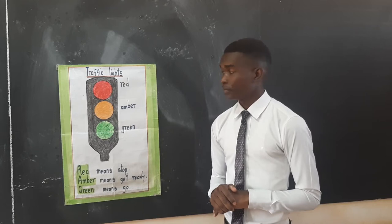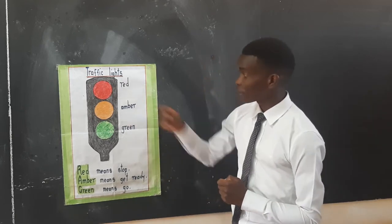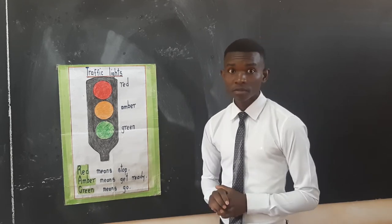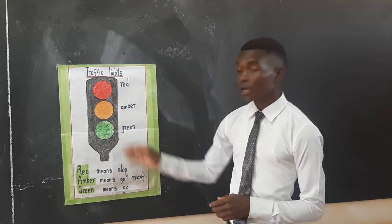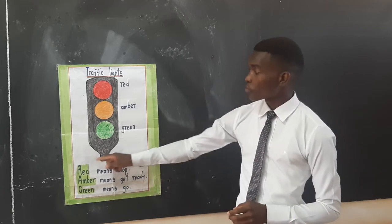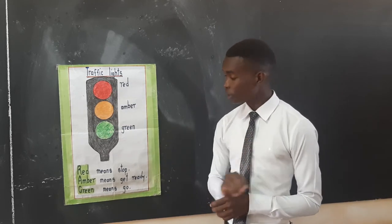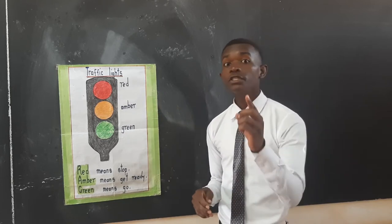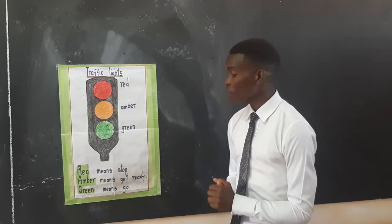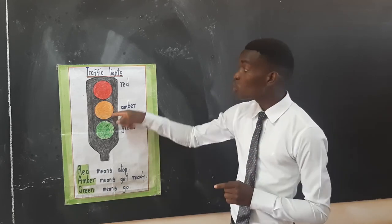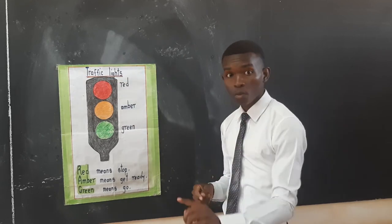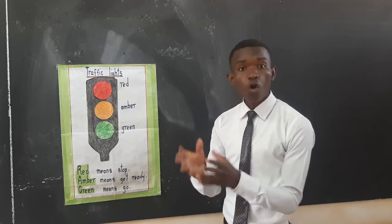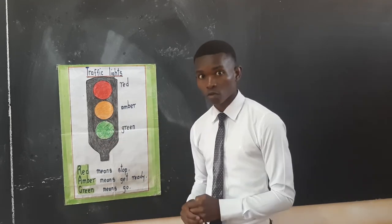We have three of them and they are in different colors. We have red. We have amber or yellow — some books indicate yellow, some indicate amber. We also have green. All these colors have specific meanings. When it shows red, it means stop. So if you are driving and it shows red, you need to stop. When it shows amber or yellow, it means get ready to stop — it doesn't mean get ready to move. It simply means get ready to stop. And green simply means go — this is the only color that gives you the go-ahead to move.